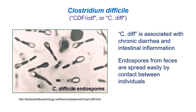Now let's talk about C. diff. We've talked about Clostridium tetanii, which causes tetanus, and Clostridium botulinum, which causes botulism — both spore-forming soil organisms. Here's another Clostridium, Clostridium difficile, which is found in the gut rather than soil but is also a spore-forming anaerobic organism. 'Difficile' of course means difficult — difficult to treat. These endospores are persistent in hospital environments, making it easy for people to get infected.